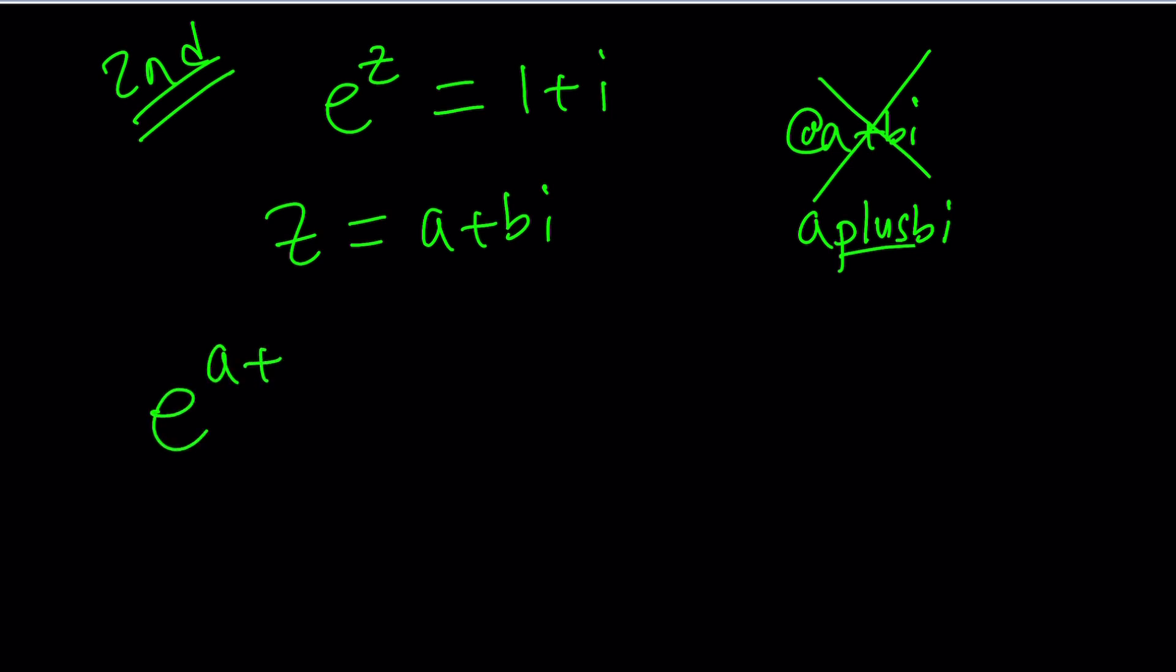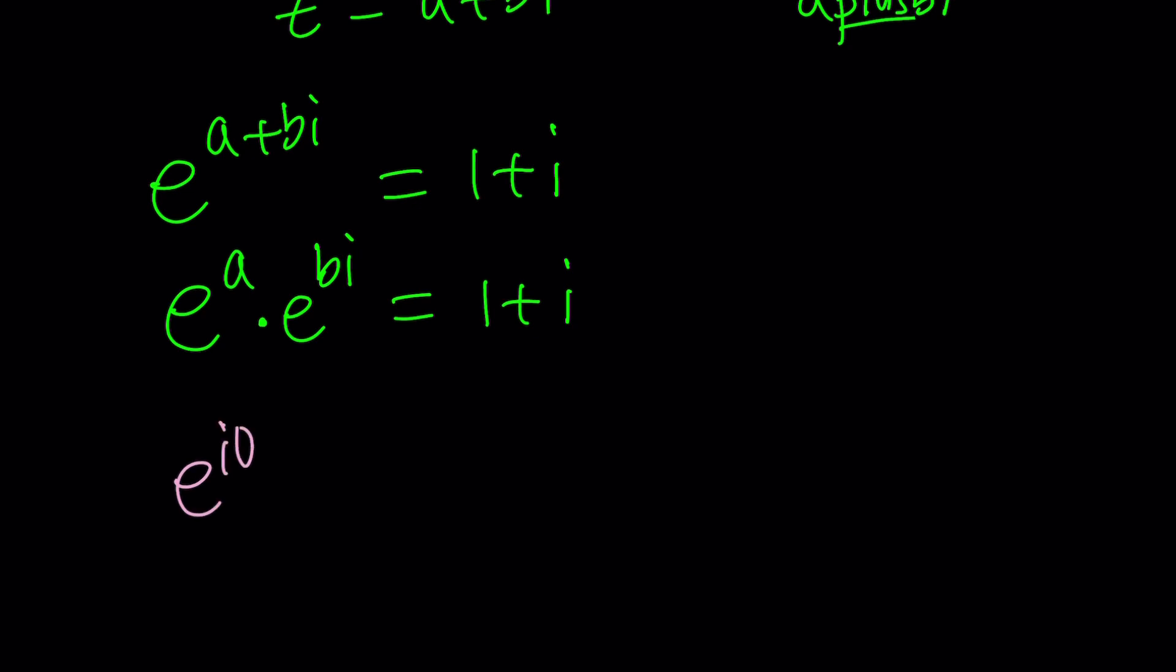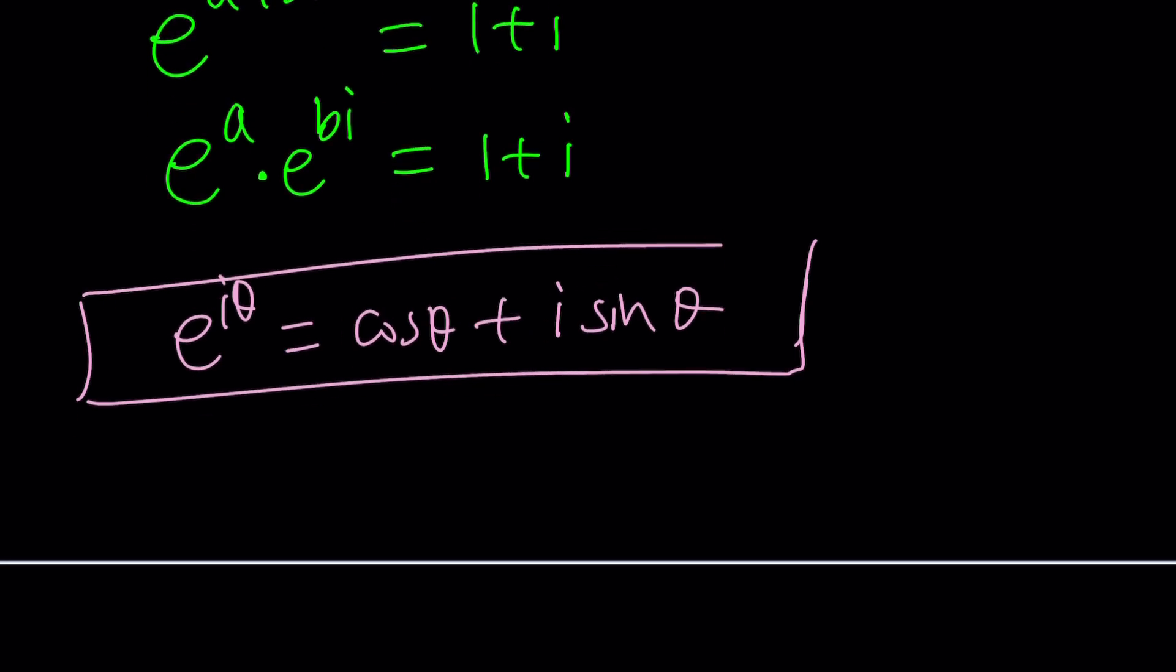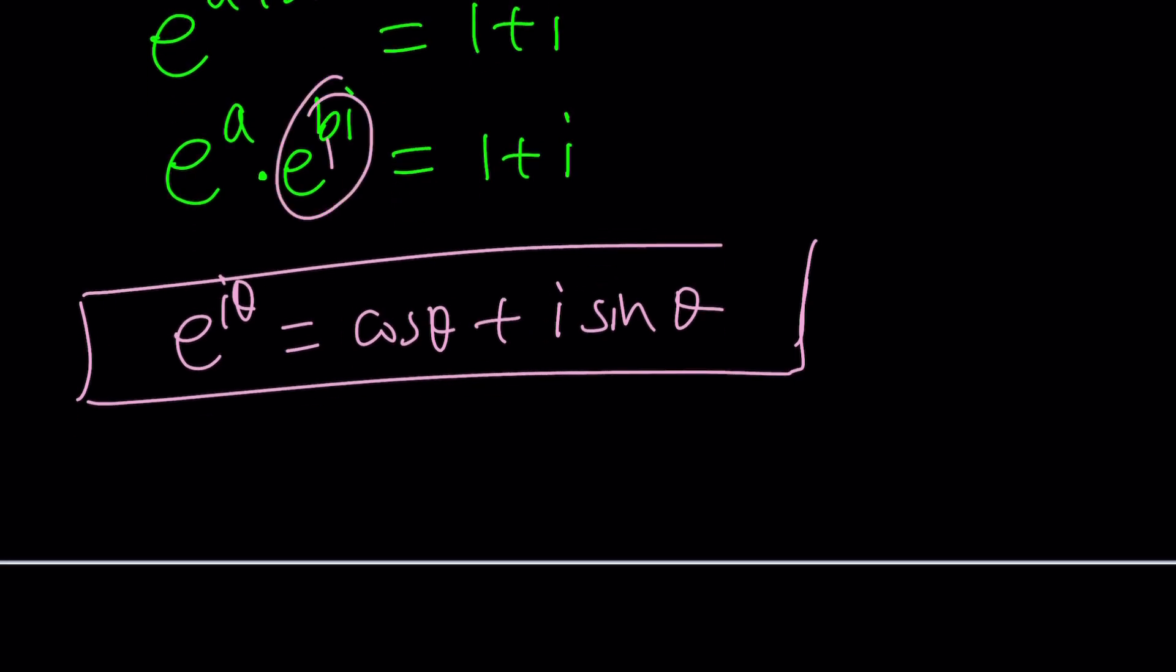what happens if I replace z with a + bi? A miracle occurs. You want to see that? e^(a+bi) = 1+i. And here's where the hocus-pocus mathemagic comes in. We're going to separate e^a times e^(bi). And this is still going to be 1+i. And now, here's where Euler comes in. Knock, knock. Euler is coming. And Euler's formula is e^(iθ) = cos θ + i sin θ. Beautiful, isn't it? This is just amazing and mind-blowing. Replace θ with π over 2, π. You're going to find amazing identities, which are beautiful, beautiful, and beautiful. Okay,